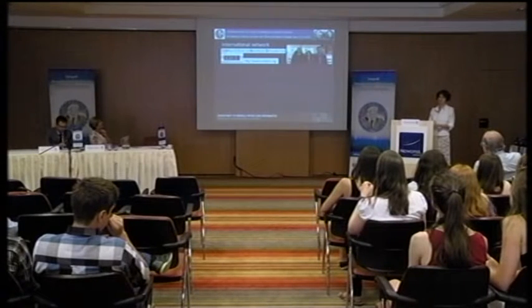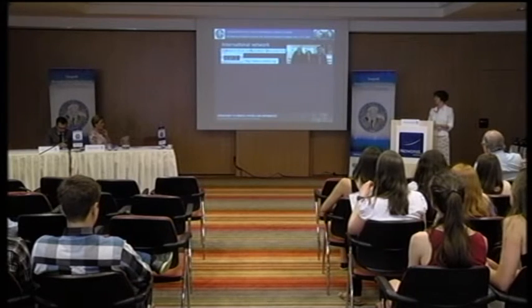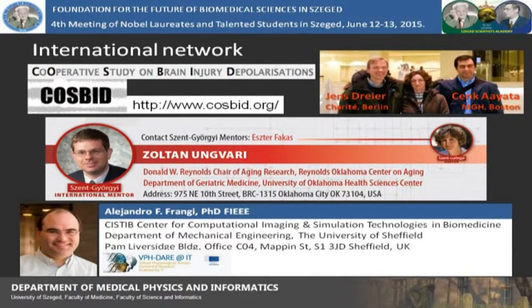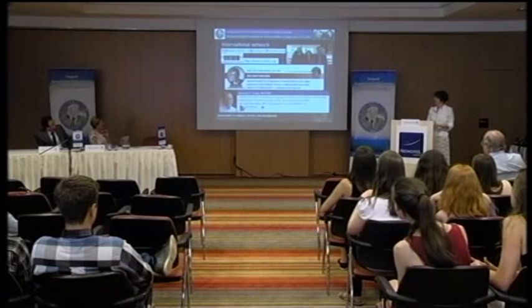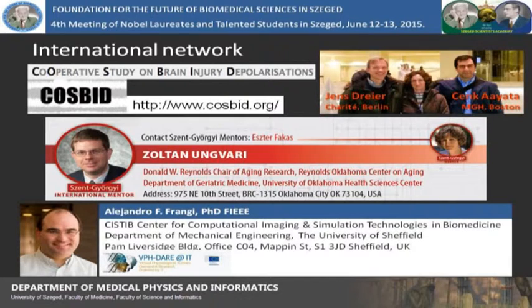Our international network contains a group of clinicians and basic scientists called the Co-operative Study on Brain Injury Depolarizations. These research groups all over the world investigate spreading depolarizations. We have close contact with a research group in Oklahoma interested in the aging of the cerebrovascular system, and we have an international San Giorgi mentor from that lab. Finally, we have collaboration with a group in Sheffield, UK, interested in more chronic cerebrovascular diseases like Alzheimer's disease.